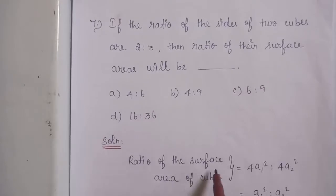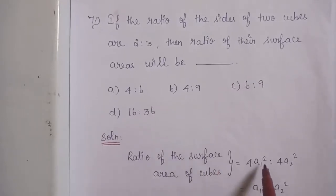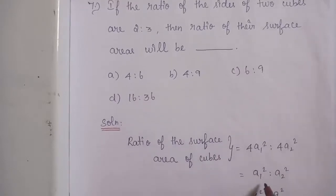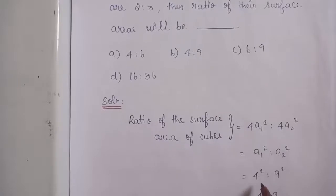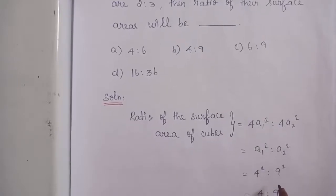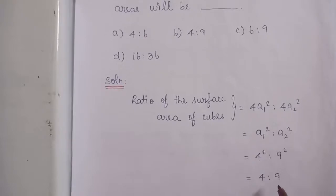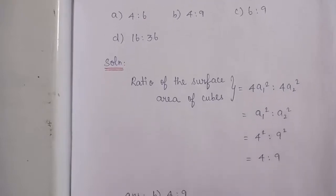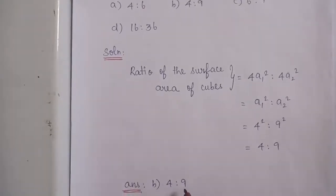Solution: Ratio of surface areas of two cubes equals 4A₁² : 4A₂², which simplifies to A₁² : A₂², which equals 2² : 3², which equals 4:9. The correct option is Option B: 4:9.